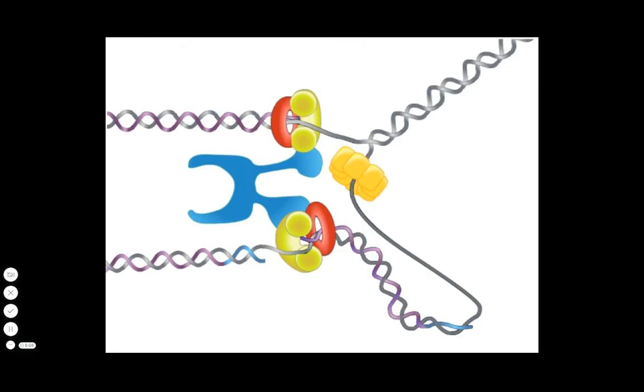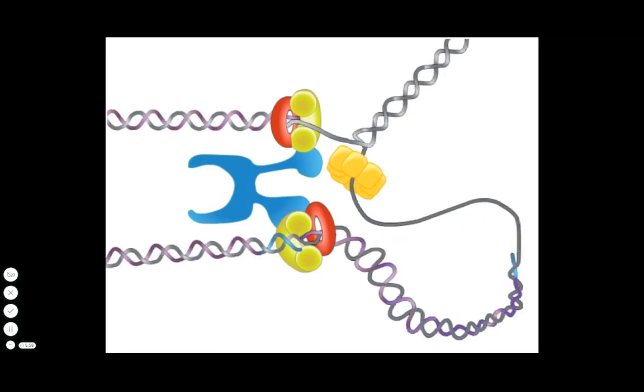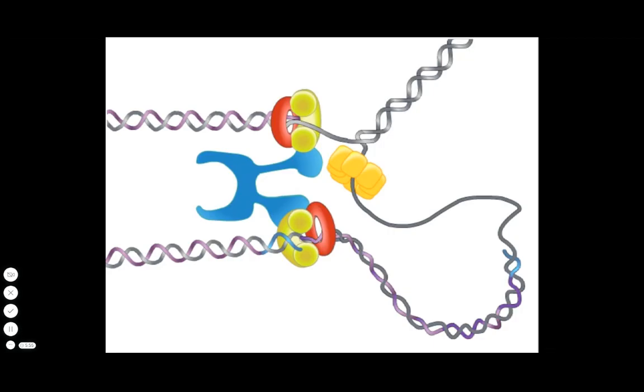DNA replication continues as the DNA polymerase on the lagging strand meets the 5' end of the next primer, causing the polymerase and the sliding clamp to disengage.